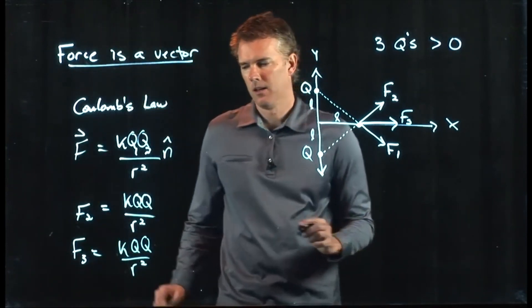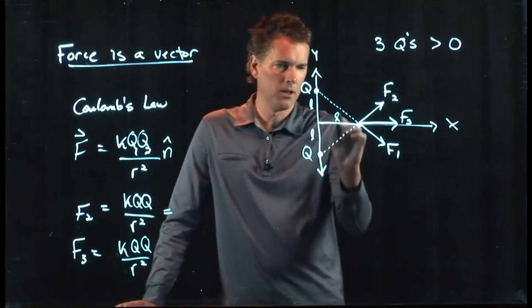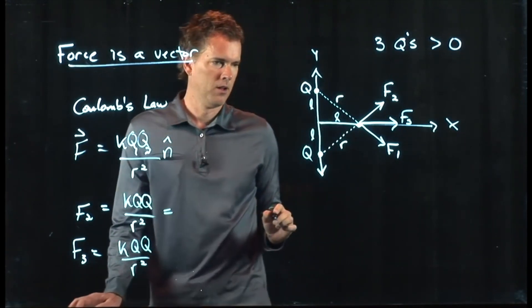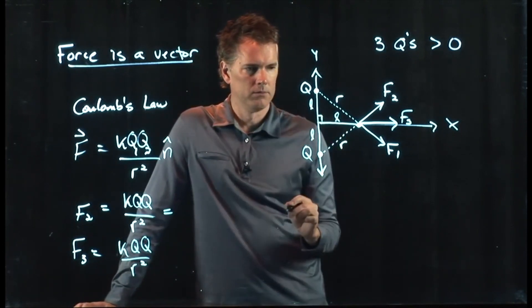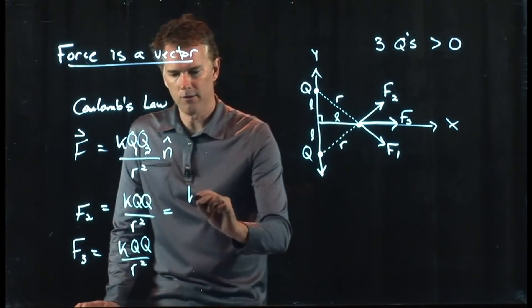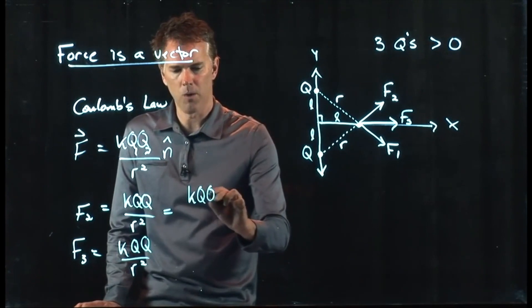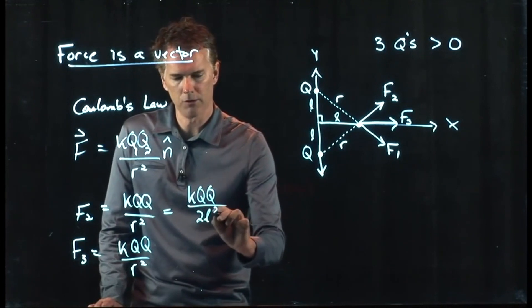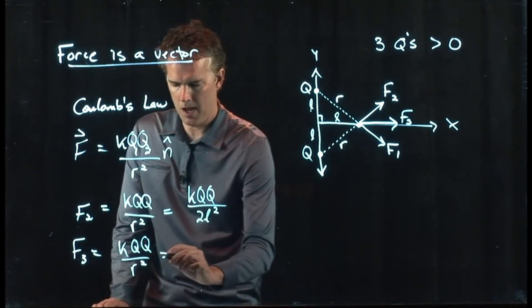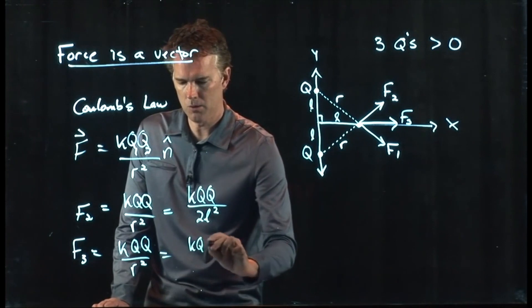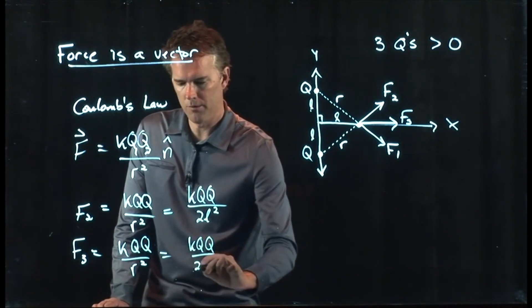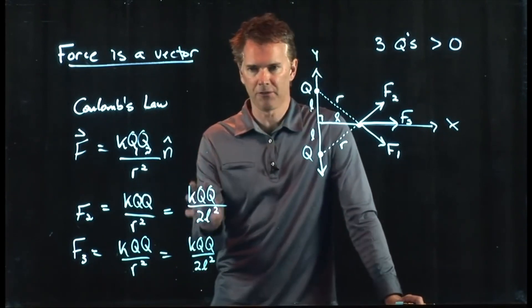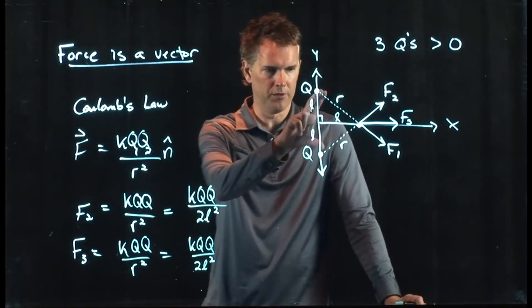And that R squared is what? It's this. That's our R. But this is a right triangle. So R squared is, in fact, L squared plus L squared, which is 2L squared. And the same on F3. KQQ over 2L squared. All right. So those are the strengths of the two forces due to those guys.